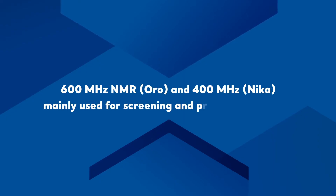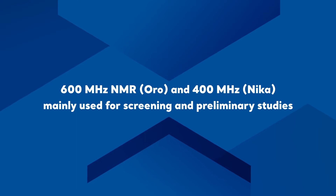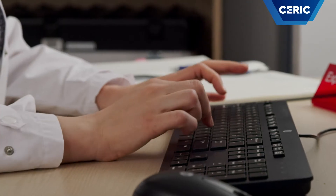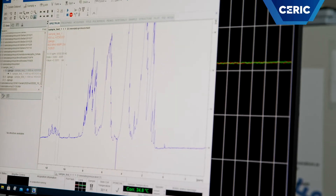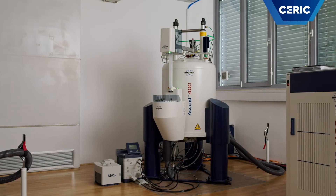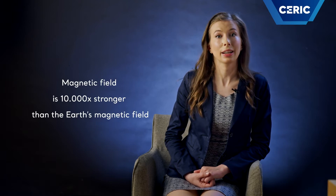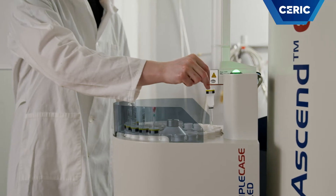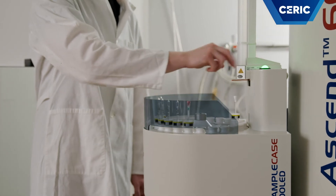One of the 600 and 400 MHz instruments are mainly used for daily routine work and for screening and preliminary studies. NMR instruments consist of a computer that is used for instrument control and data processing, a spectrometer that transmits and receives the radio frequency waves used to make the NMR measurements, and a superconducting magnet that generates a powerful magnetic field that is tens of thousands of times stronger than the Earth's magnetic field. Samples for NMR measurements are placed within the magnetic field and exposed to radio waves.